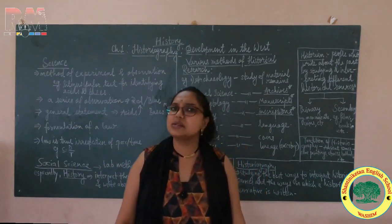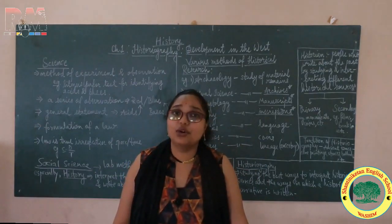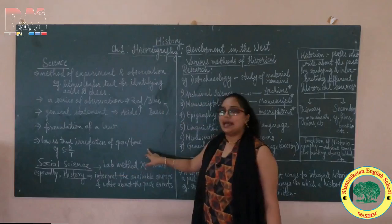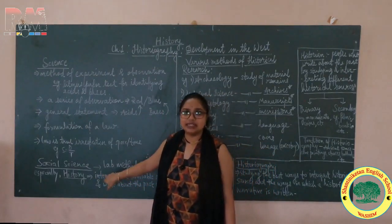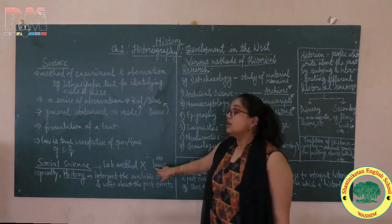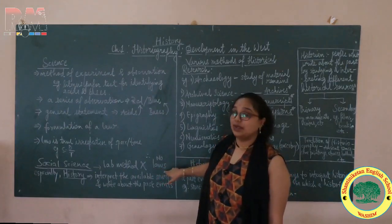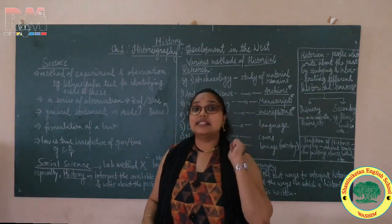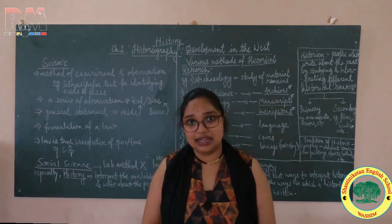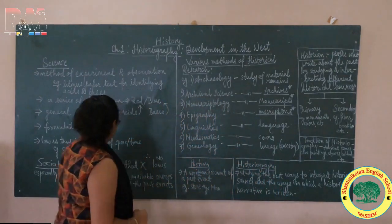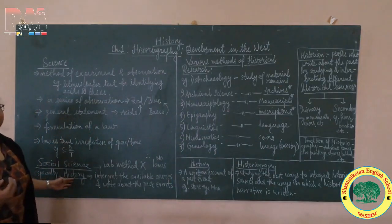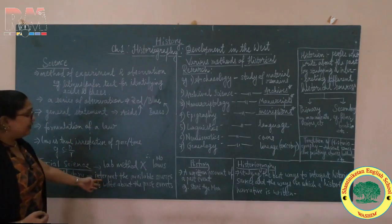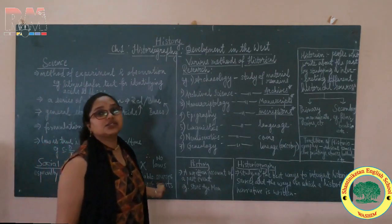But do you think Social Science also works in the same way? Of course not. When we come to Social Science, there is no lab method available. And that is why there is no formulation of laws when we talk about Social Science. Especially in History, there is no such method of experiment and observation. Rather, we have to interpret the available sources.